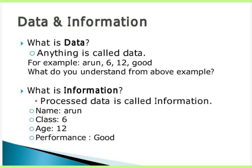What did you understand from the above example? What is Arun? What is 6? What is 12? What is good? We can't say anything meaningful. Next, we come to information. Processed data is called information. For example: Name Arun, of class 6, his age is 12, and his performance is good. Now you get clear information — this processed data is called information, which gives a meaningful and understandable result.